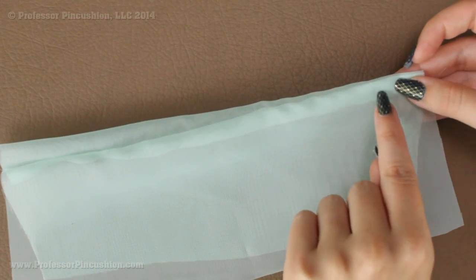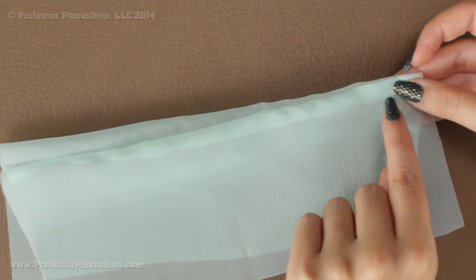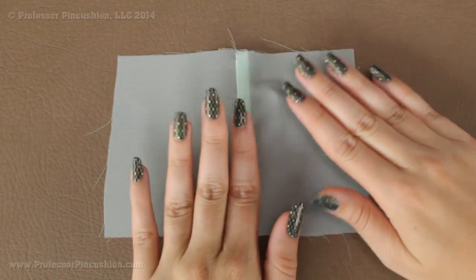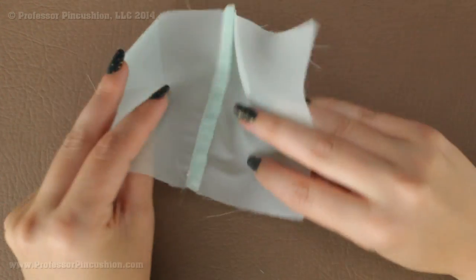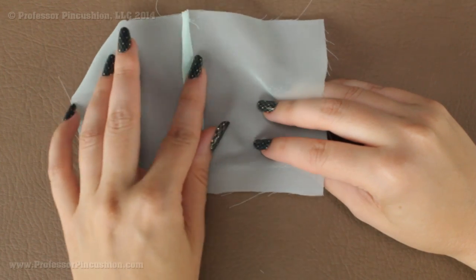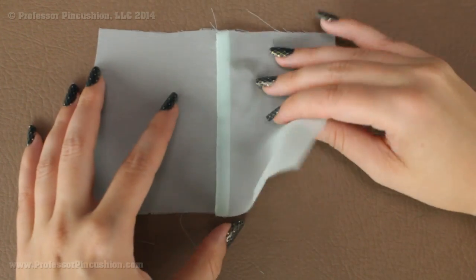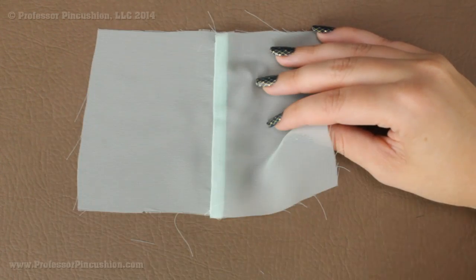So once you sew, all this raw edge is going to be enclosed and you'll end up with something that looks like this. So this is now the right side of my fabric on the wrong side. We still have a little bit of a seam allowance here, but it looks nice and neat. It's all enclosed and you don't have to worry about the fraying there.